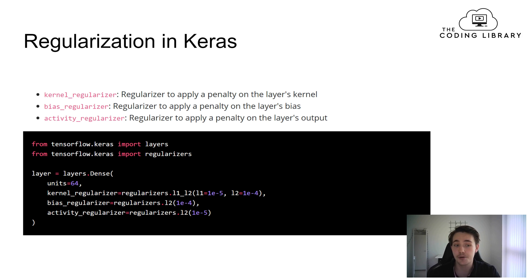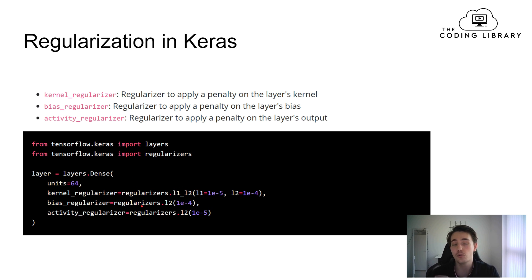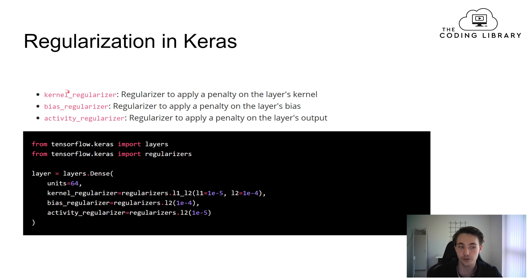If you want to apply regularization in Keras, there are built-in functions for it. You can import regularizers from TensorFlow Keras and specify in your layers what type of regularization to use. During training, it will penalize either the layer's kernel, bias, or activity — that is, the layer's output. We have different kinds of regularizers available for kernel, bias, and activity regularization.